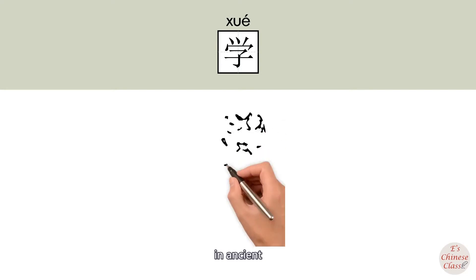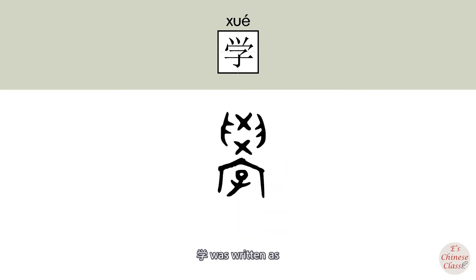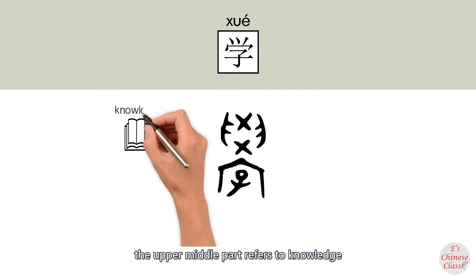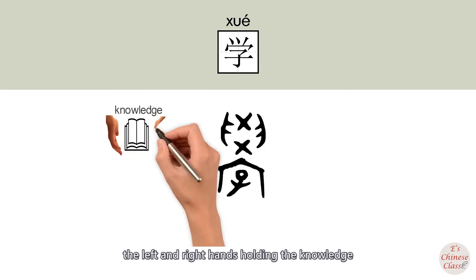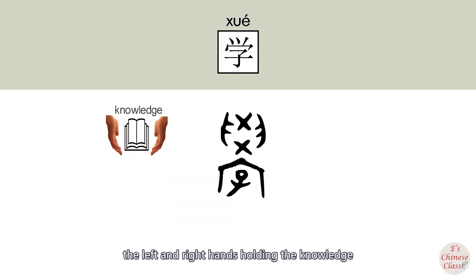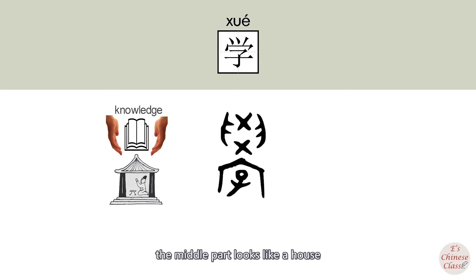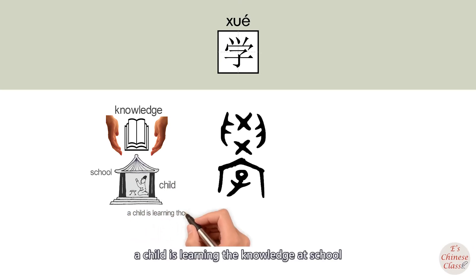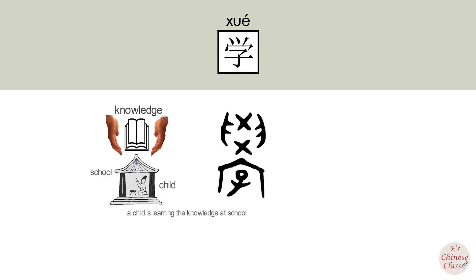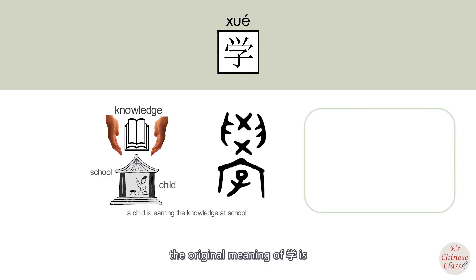In ancient times, 學 was written differently. The upper middle part refers to knowledge. The upper two sides refer to the left and right hands holding the knowledge. The middle part looks like a house, referring to school. The bottom part means a chart. This character indicates a child learning knowledge at school. The original meaning of 學 is study, learn.